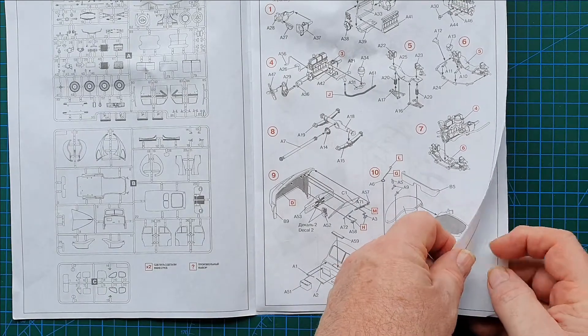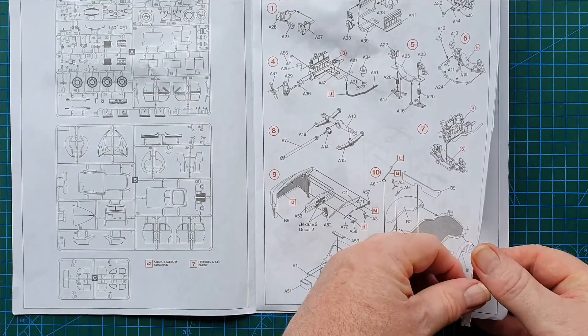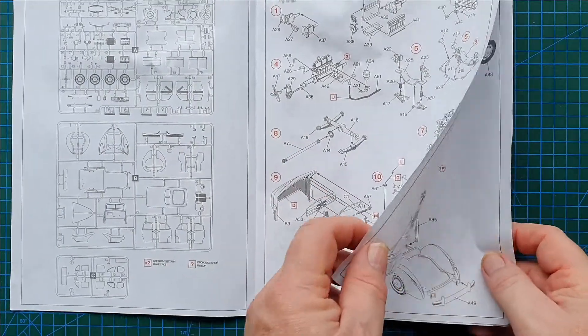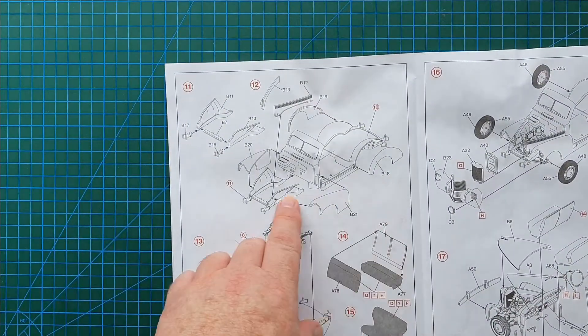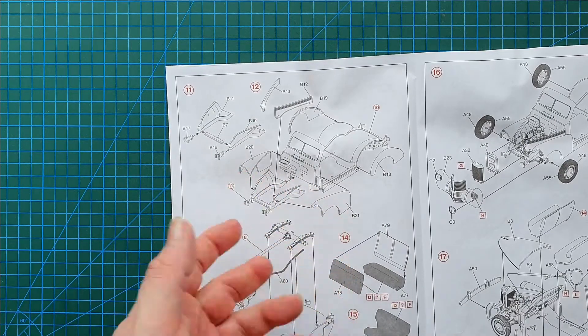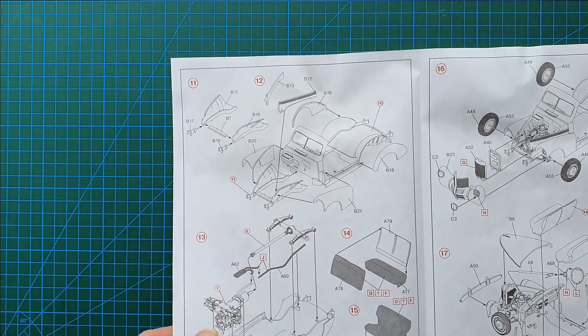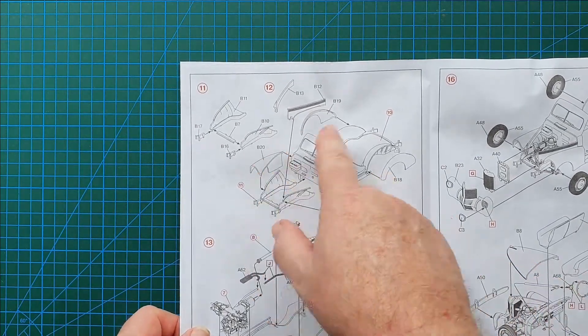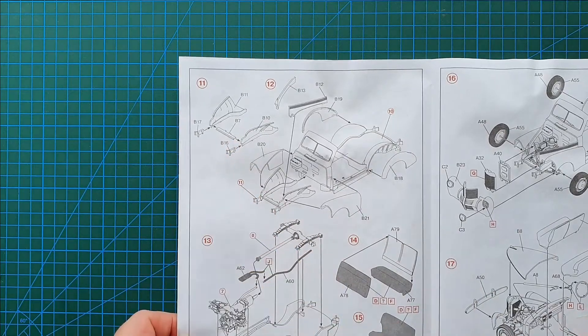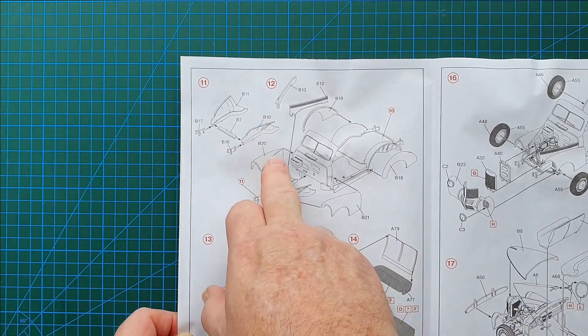There are colour call-outs, limited colour call-outs through the instructions. Then we get to putting the rest of the fenders, mudguards, whatever you want to call them, onto the body shell. They do have an inner and an outer, so you're aware.